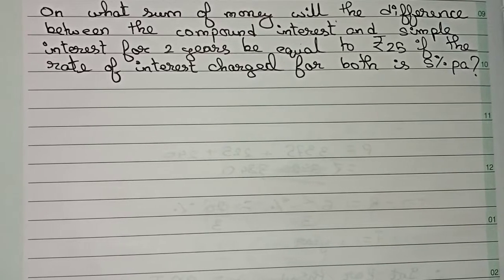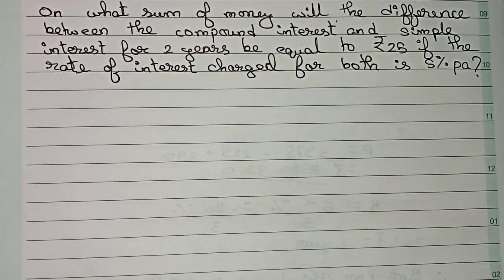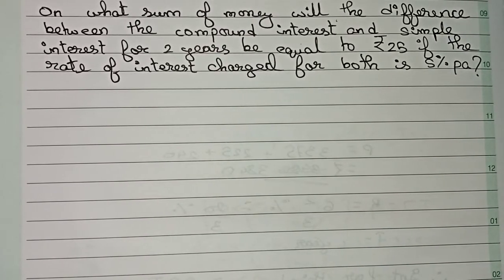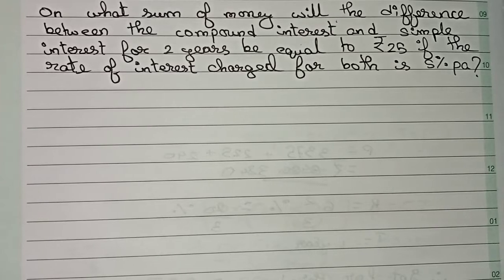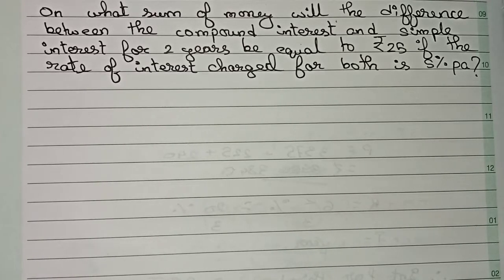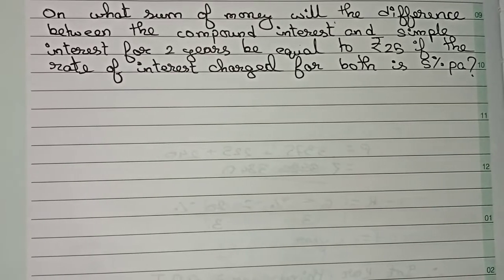Hello guys, welcome to this video. In this video, the question is: on what sum of money will the difference between the compound interest and simple interest for 2 years be equal to rupees 25 if the rate of interest charged for both is 5% per annum? So this is the question, now let's solve this.